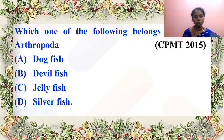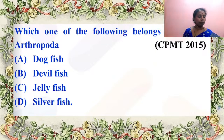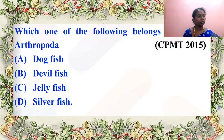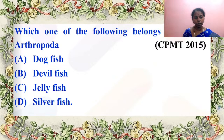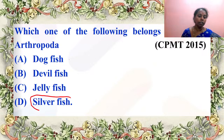Which one of the following belongs to the phylum Arthropoda? Dark fish is Scoliodon — cartilaginous; devil fish is a mollusk; jellyfish is a coelenterate. Silverfish only is an insect belonging to phylum Arthropoda — very correct answer.